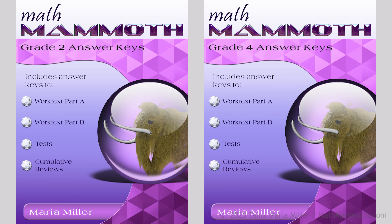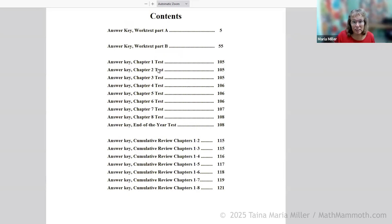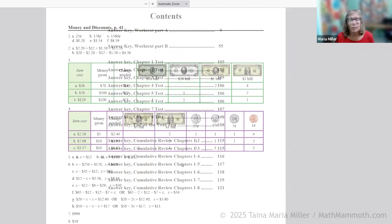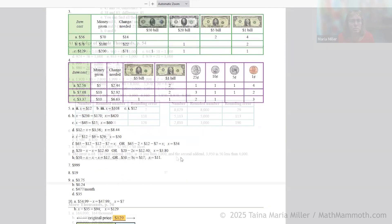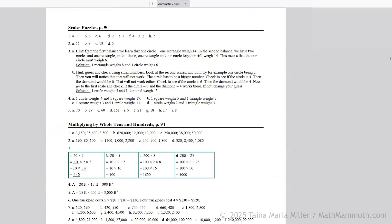The answer key book is, if you get the printed version, you have one single book with all the answers. If you get the digital, you have lots of files. This one has answers to the work texts and the tests and these extra cumulative reviews, all of that. And so that's how it looks like the scales puzzles. It gives you a hint, solution.